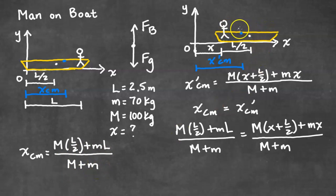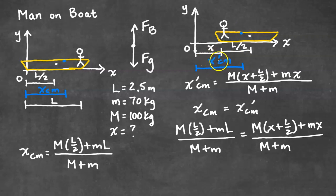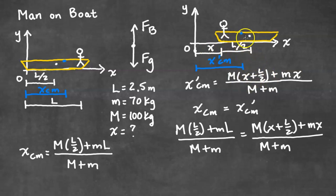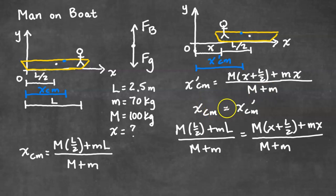To calculate the initial center of mass of the system, we use x_cm = (M_boat · L/2 + M_man · L) / (M_boat + M_man), treating the boat as a point mass at its center L/2, and the man starting at the end of the boat at position L. The man then walks to the left, pushing the boat to the right. The man is now at some location X, and we call the new center of mass x_cm'. The new center of mass equation is x_cm' = (M_boat · (L/2 + X) + M_man · X) / (M_boat + M_man), because the boat has shifted right by X.